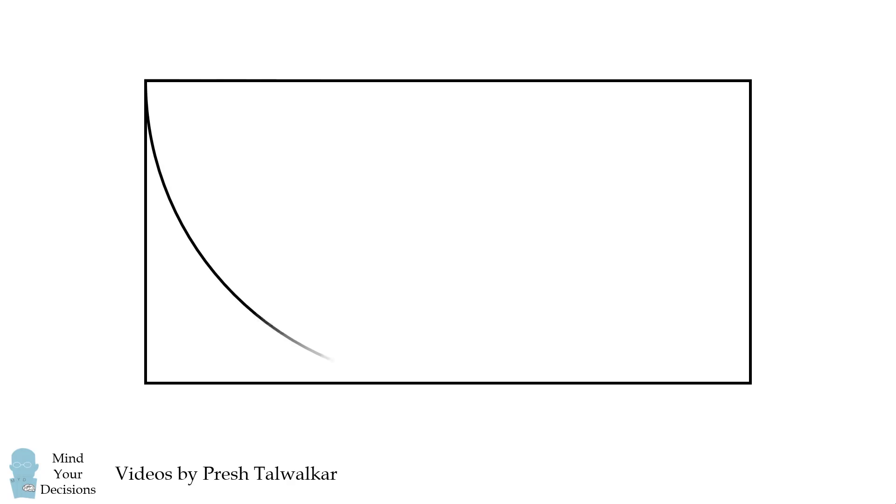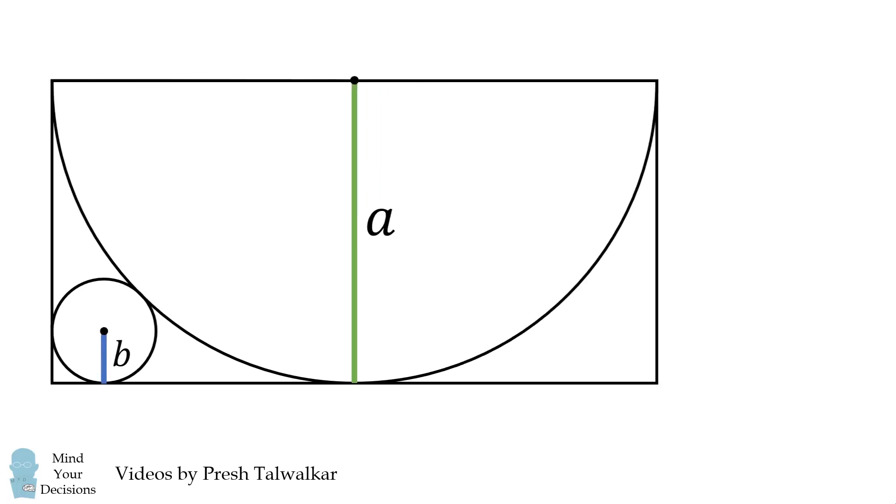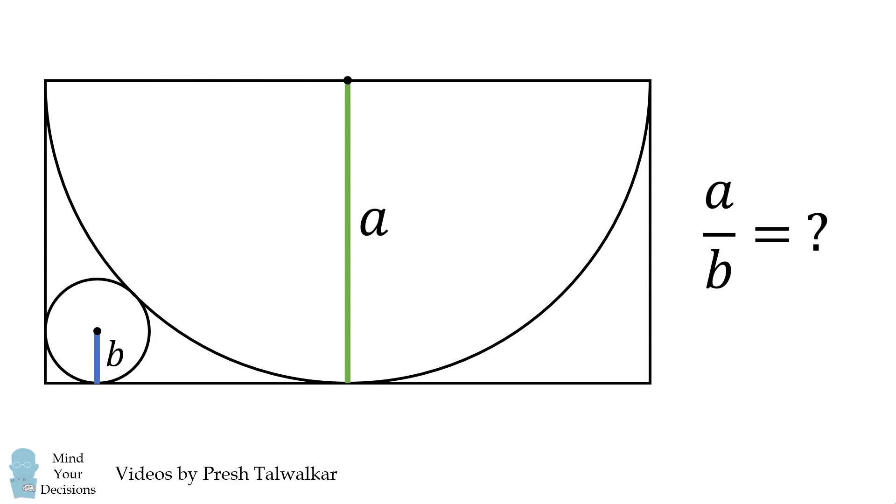In a rectangle, inscribe a semicircle along one of its sides. Then, inscribe a circle that's tangent to both the semicircle and the rectangle. If the semicircle has a radius equal to a, and the circle has a radius equal to b, what is the value of a divided by b?